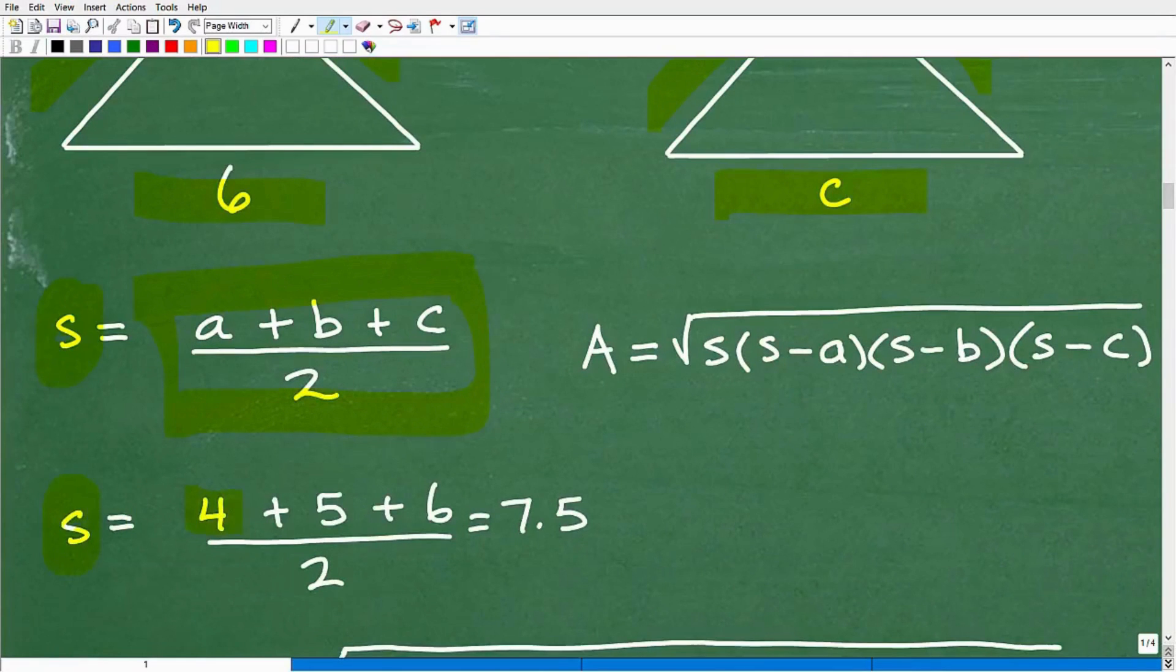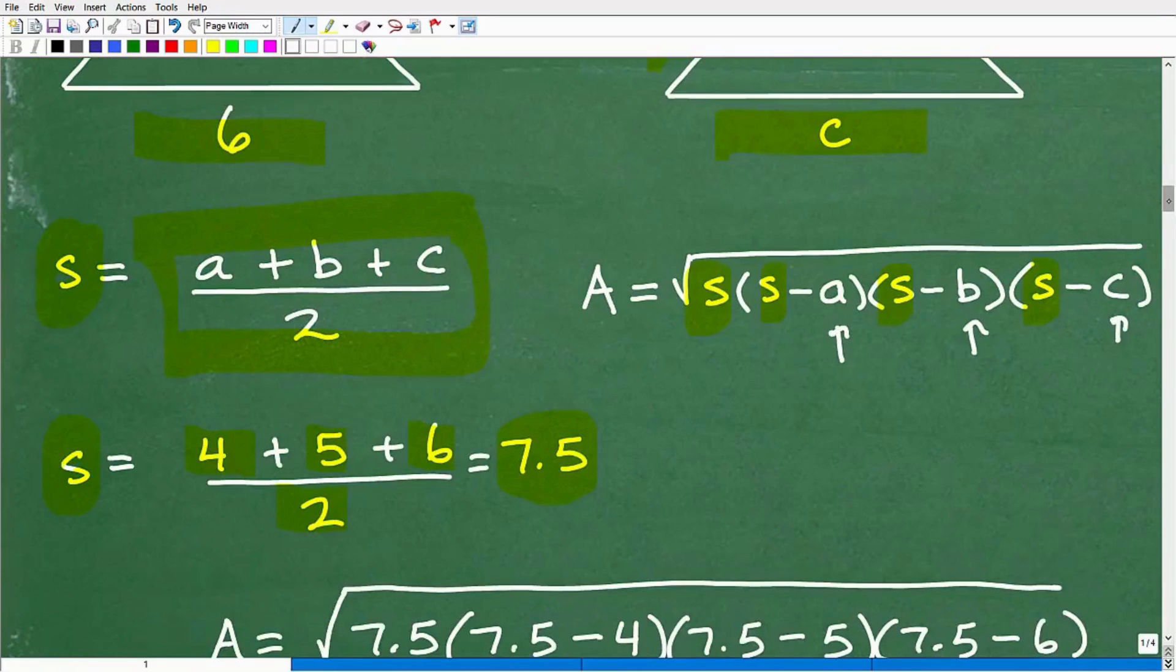So S is going to be 4 plus 5 plus 6, and then when we divide that by 2, of course, that would be 15. Divide that by 2 is 7.5. So we're going to plug in our 7.5 here, here, here, and here, and then we'll plug in the respective sides of the triangle in these spots, and then we'll do all the number crunching. So let's go ahead and take a look at what that looks like.